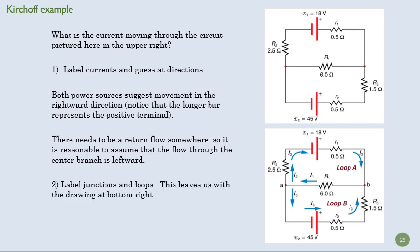And then we want to label our junctions and loops. We're going to call this loop A and we're going to call this loop B that goes around here. And then we only have two junctions, so we're going to call that A and B. We have potentially four equations here and three unknowns. We know the voltages or the resistances. We want to know the currents. That's one current, two current, three current.